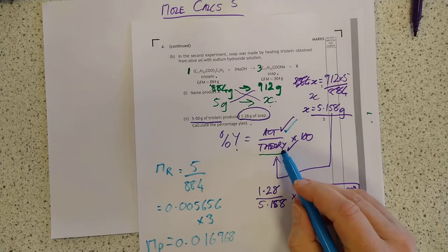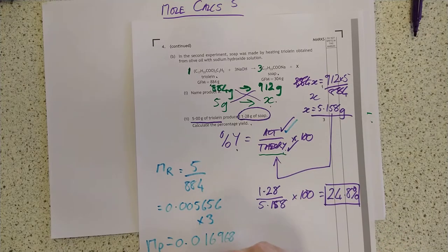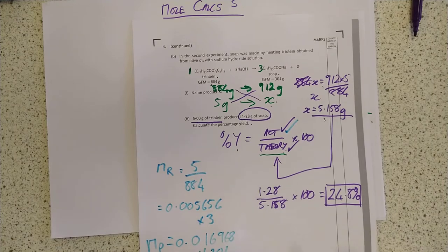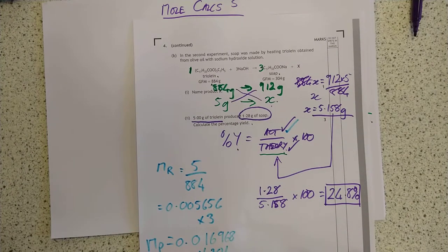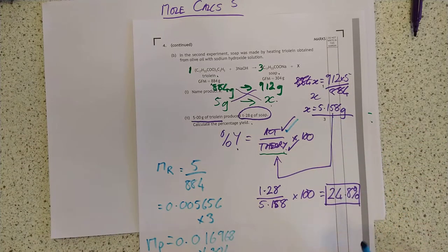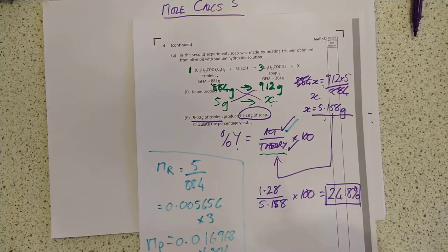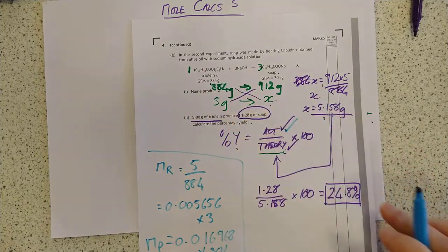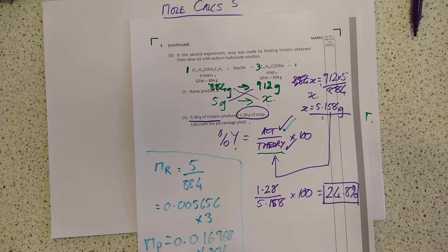Now we don't want moles, we want mass. So we multiply by the GFM which is 304. Gives us shockingly enough, precisely the same mass. So if you like doing moles, you mole away. If you like doing proportion, then knock yourself out. It's both good. Let's do the second example.